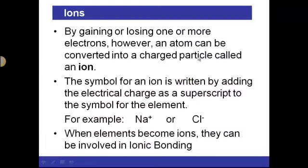Ions are formed by either gaining or losing one or more electrons, so an atom can be converted into this charged particle called an ion. The symbol for an ion is written by adding the electrical charge as a superscript to the symbol for that element.